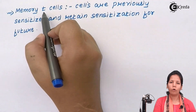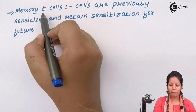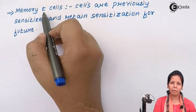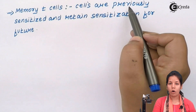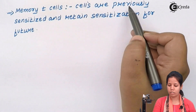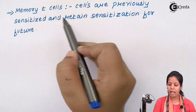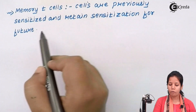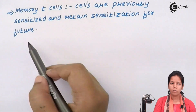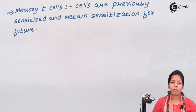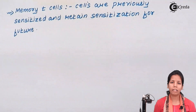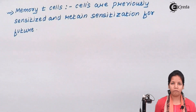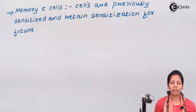Finally, the fourth kind of T-lymphocytes: memory T-cells. Memory T-lymphocytes are previously sensitized and they retain that sensitization for the future. Memory T-cells basically take a record — they retain in their memory if there was an infection previously, and they try to kill that same infection more effectively in the future.